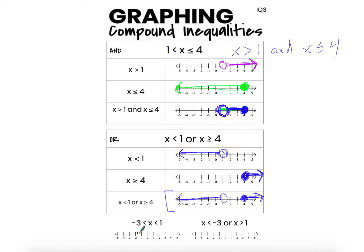Practicing with this inequality, most students will simply graph open dot at negative 3, open circle at 1, and then connect those two endpoints with the solution region. These are the numbers that are both greater than negative 3 and less than 1. Negative 3 is not in that solution, any number less than negative 3 is not in that solution set, and 1 is not in that solution set either. This represents all numbers between negative 3 and 1, not including those two values since there's no equal sign.